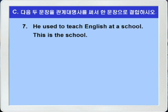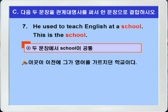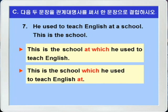7번입니다. He used to teach English at a school. This is the school. 그는 이전에 어떤 학교에서 영어를 가르쳤다. 이곳이 그 학교이다. 두 문장에서 공통된 것을 찾아보면 school이 공통이죠. 따라서 the school을 선행사로 삼고 at a school을 school이 사물이니까 at which로 바꿔서 연결시키면 됩니다. This is the school at which he used to teach English. 물론 전치사 at을 뒤로 보내서 This is the school which he used to teach English at 이런 문장도 가능합니다.